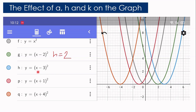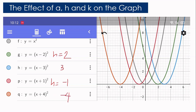If you have X minus 3, the value of H is 3 — the blue parabola shifted 3 units to the right from 0. But if the value of H is negative, like in the quantity X plus 1 squared, H is equal to negative 1, and the graph shifted 1 unit to the left. And if we have X plus 4 squared, H is negative 4, so the graph shifted 4 units to the left.